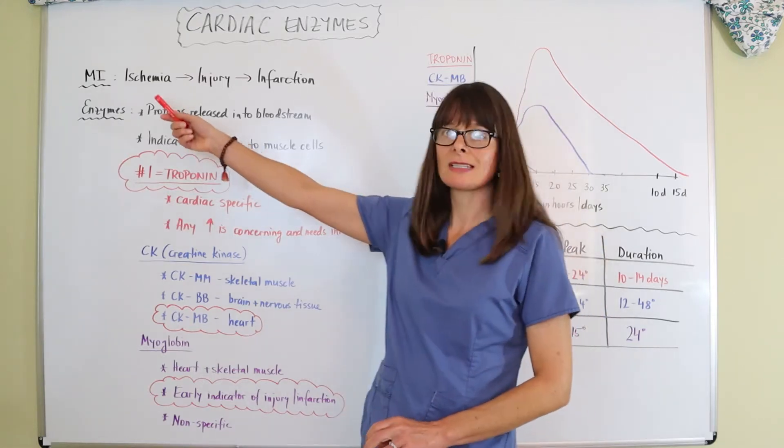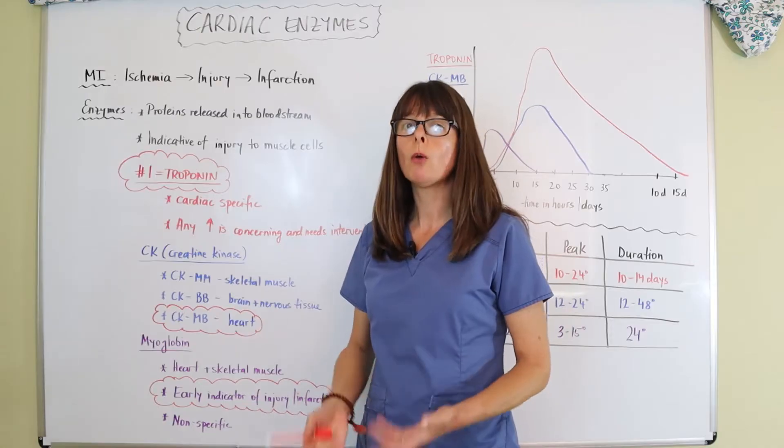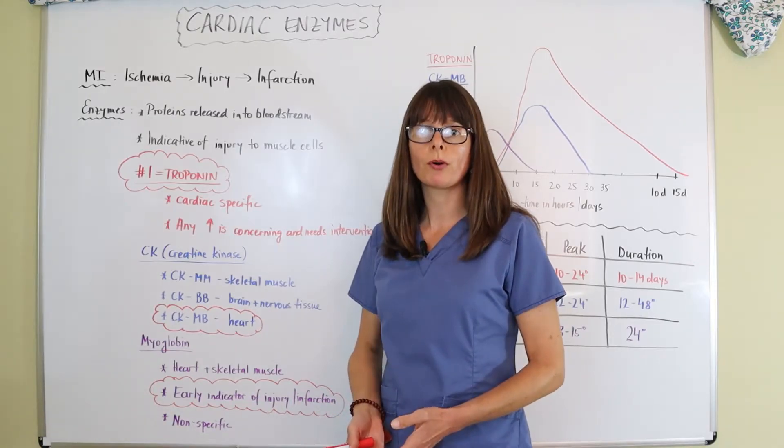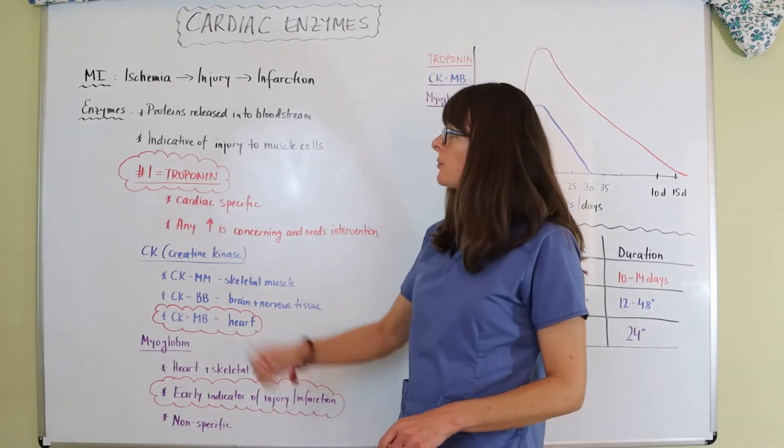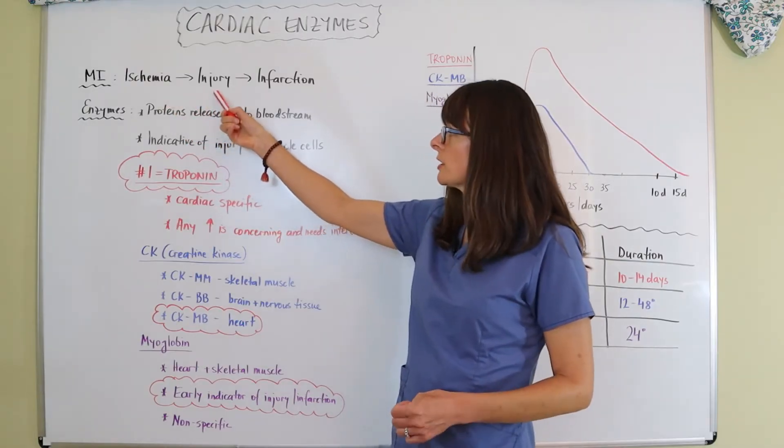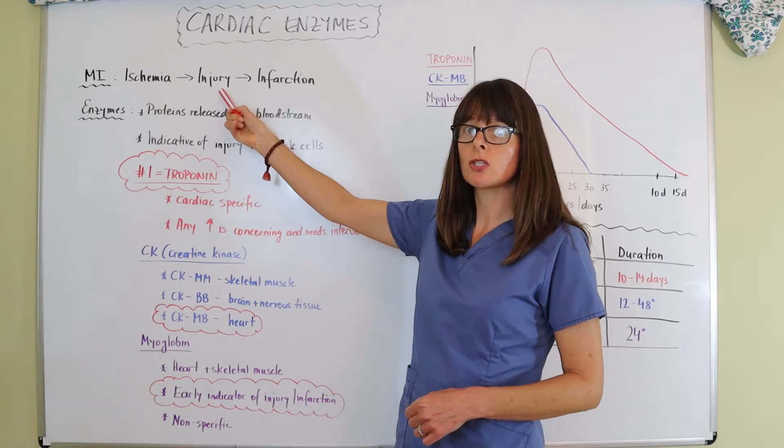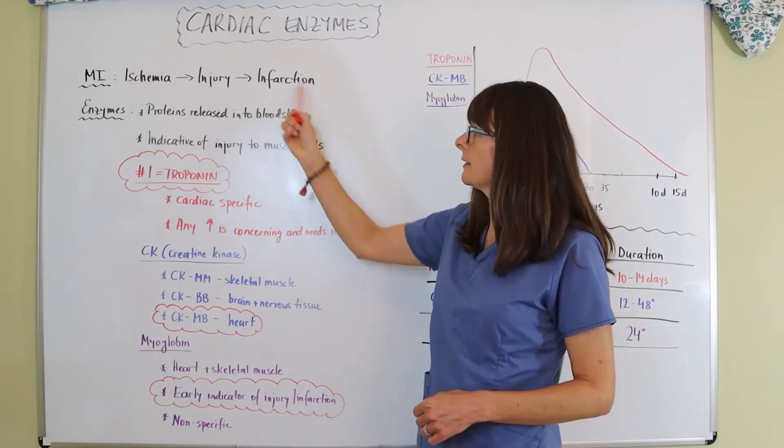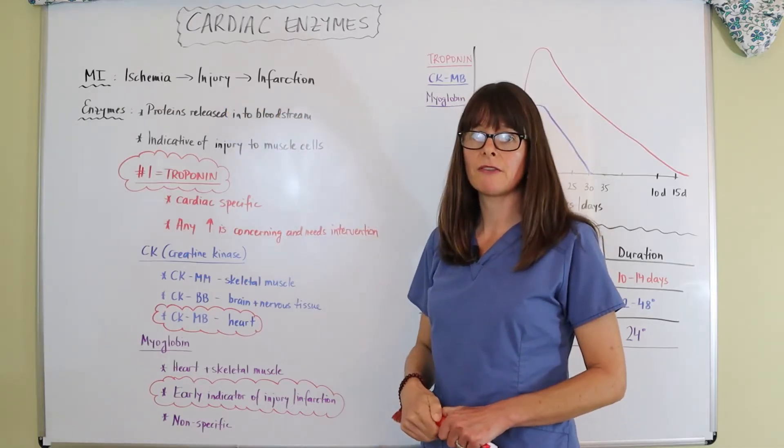But in an MI, there is lack of blood flow or no blood flow to one or more of the coronary arteries. That results first in ischemia, so lack of blood flow. Eventually there will be injury. And if there's no intervention, then the patient will have a full infarction.